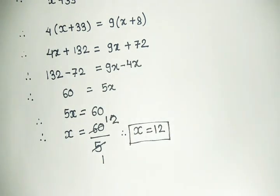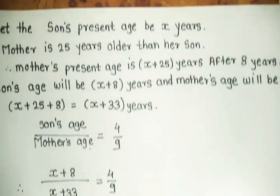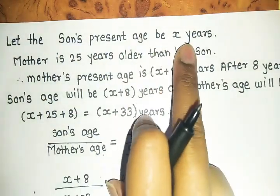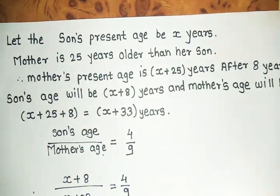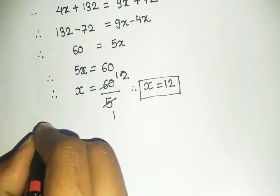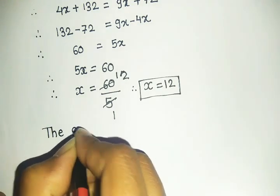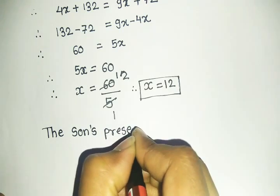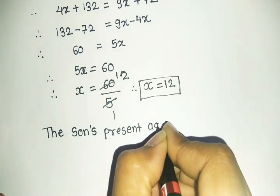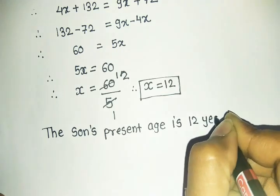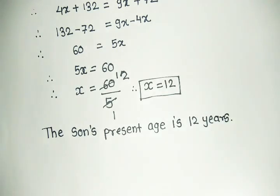Now, what did we consider x to be? We considered x as the son's present age, and the value of x we found is 12. Therefore, the son's present age is 12 years.